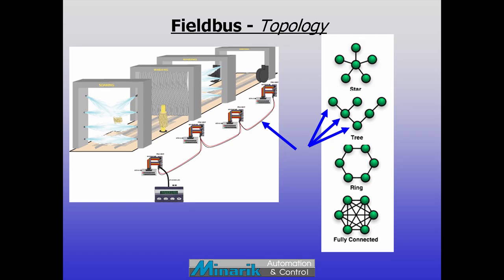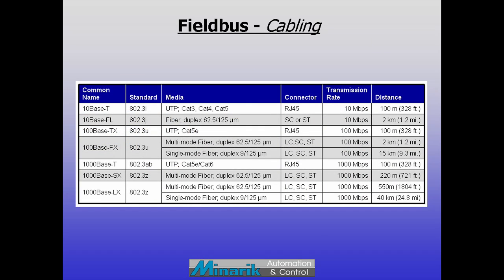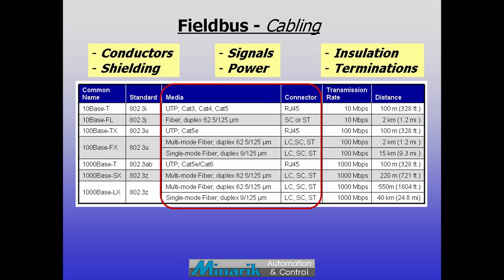Topology and cabling determine maximum transmission distances and number of devices. Cabling is often proprietary. Manufacturers can specify number of conductors, type of shielding, transmission of signals and device power, insulation and terminations.